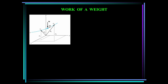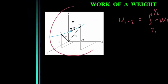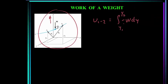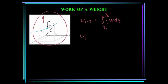Let's take a special case: the work of a weight. The work done by the gravitational force acting on a particle, or the weight of an object, can be calculated using the work between points 1 and 2 is equal to the integral of minus W dy from Y1 to Y2. Y is positive upward and the weight is pointing down — that's where the minus sign comes in. This simplifies to work between points 1 and 2 equals minus the weight times delta Y. The work of a weight is the product of the magnitude of the particle's weight and its vertical displacement. If delta Y is upward, the work is negative since the weight force always acts downward.